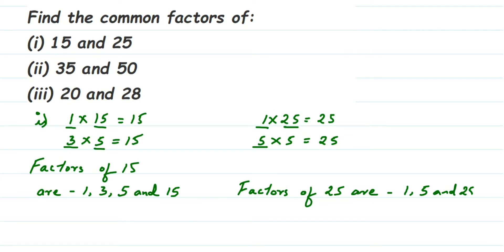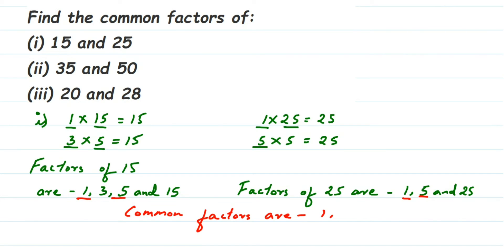From these factors we have to find out the common factors. 1 is common — it's present in both. 5 is also present in both. We don't have 3 common in both 15 and 25, so that's not common. So the common factors of 15 and 25 are 1 and 5. This is how you find common factors: first find the factors of each number and then check which ones are common.